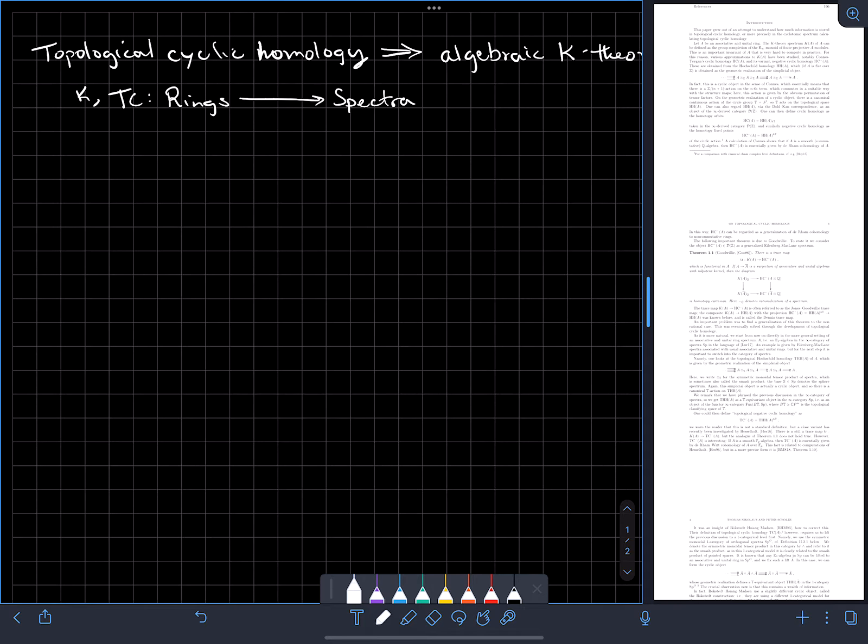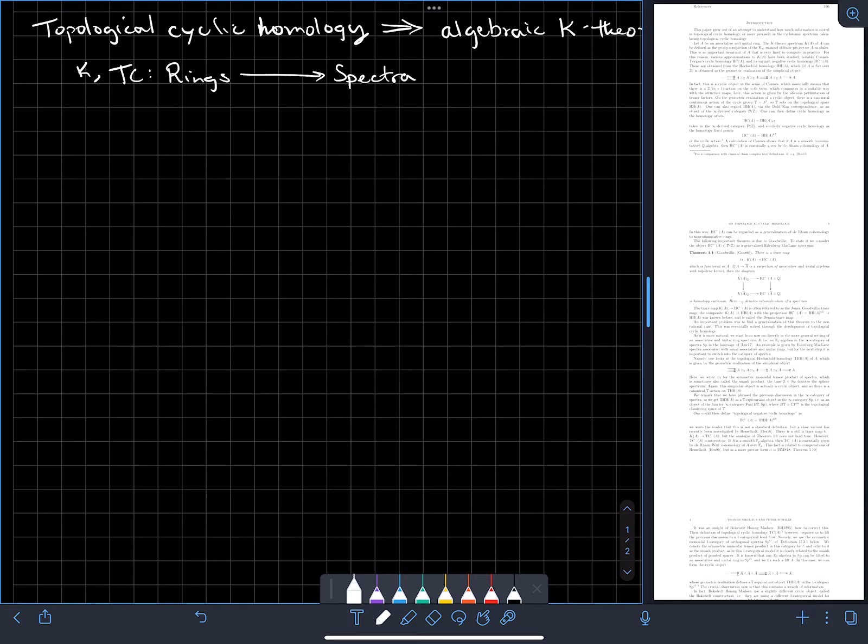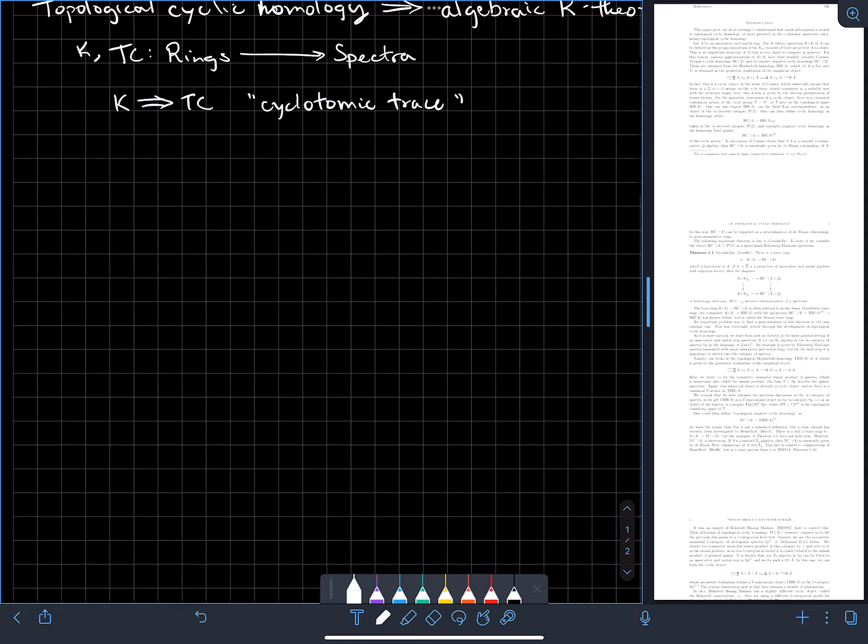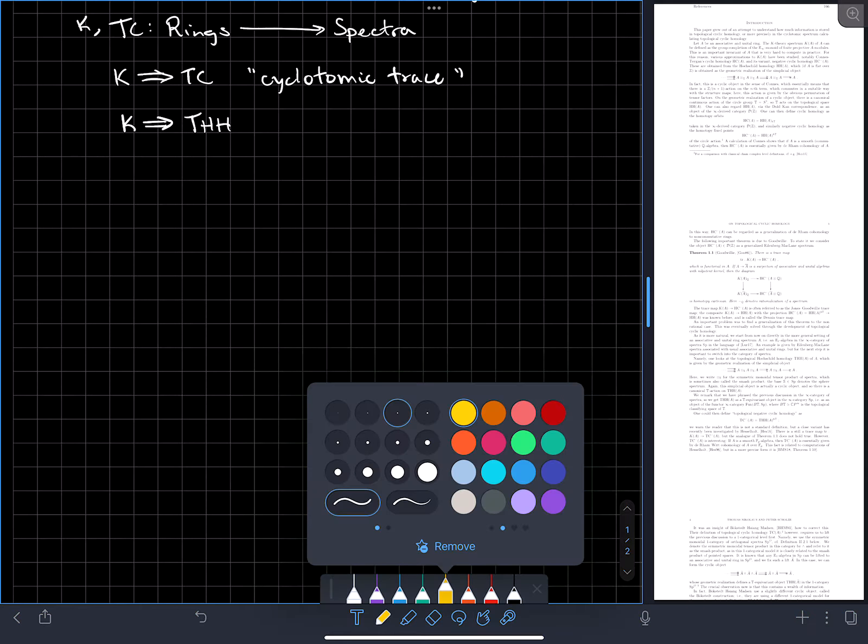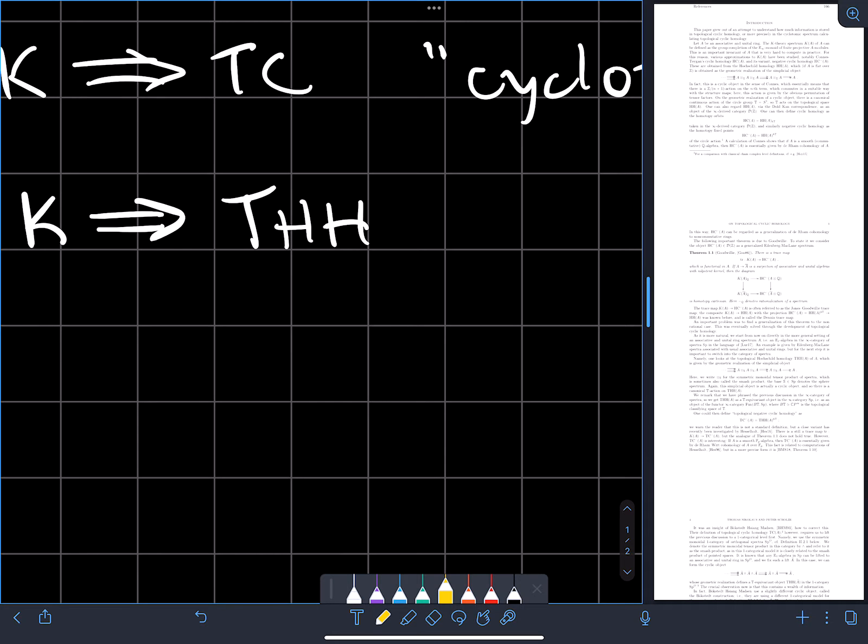As is algebraic K-theory. So both K-theory and TC are functors from rings to spectra. And there is in fact a natural transformation from K to TC. This is called the cyclotomic trace.